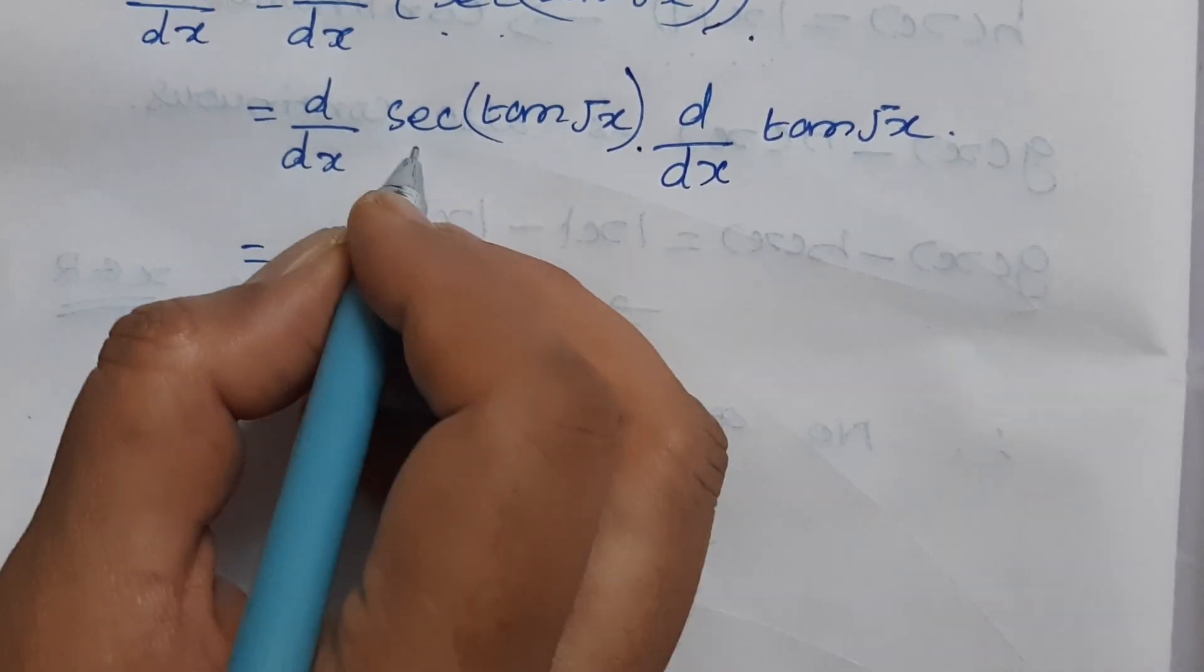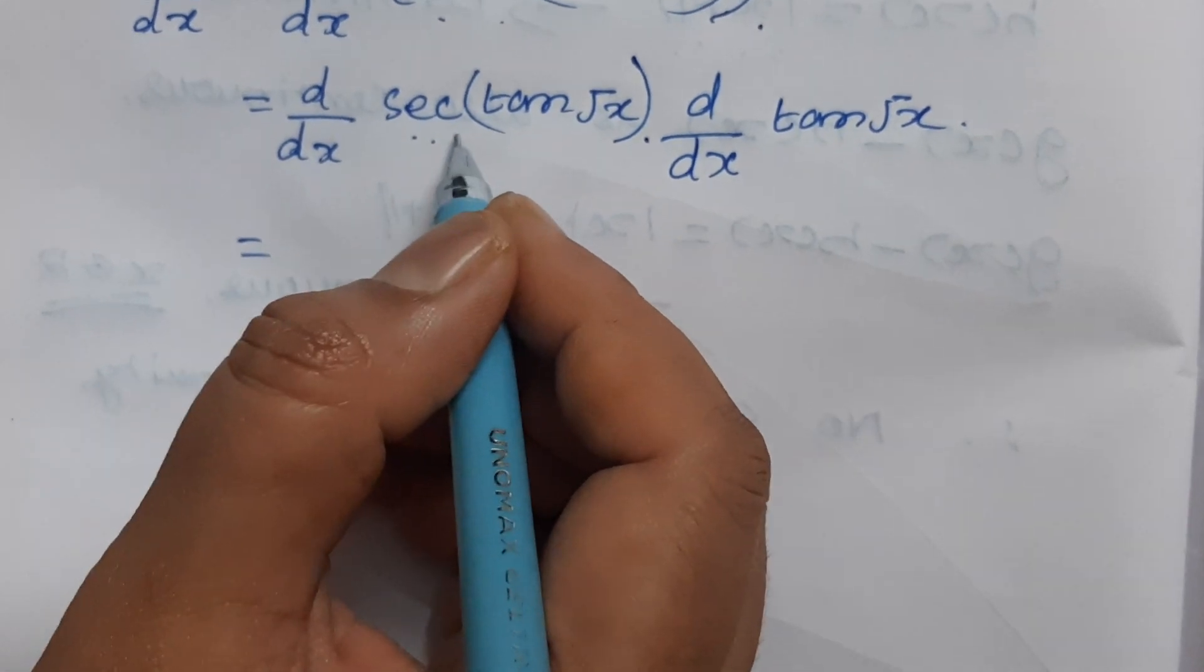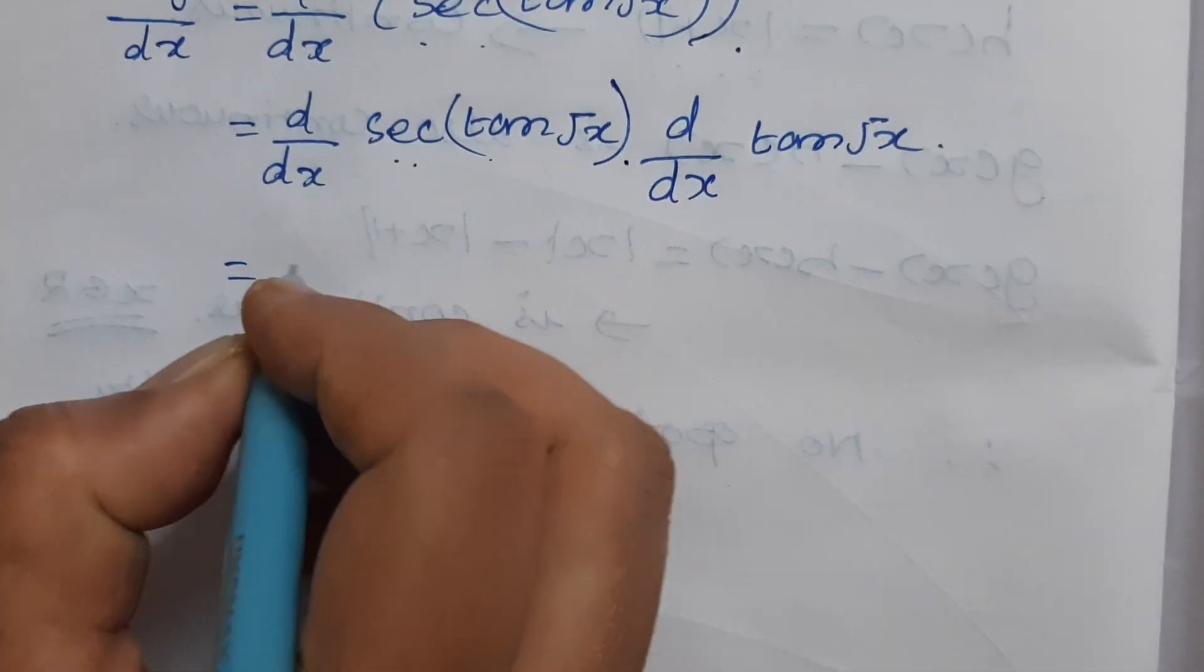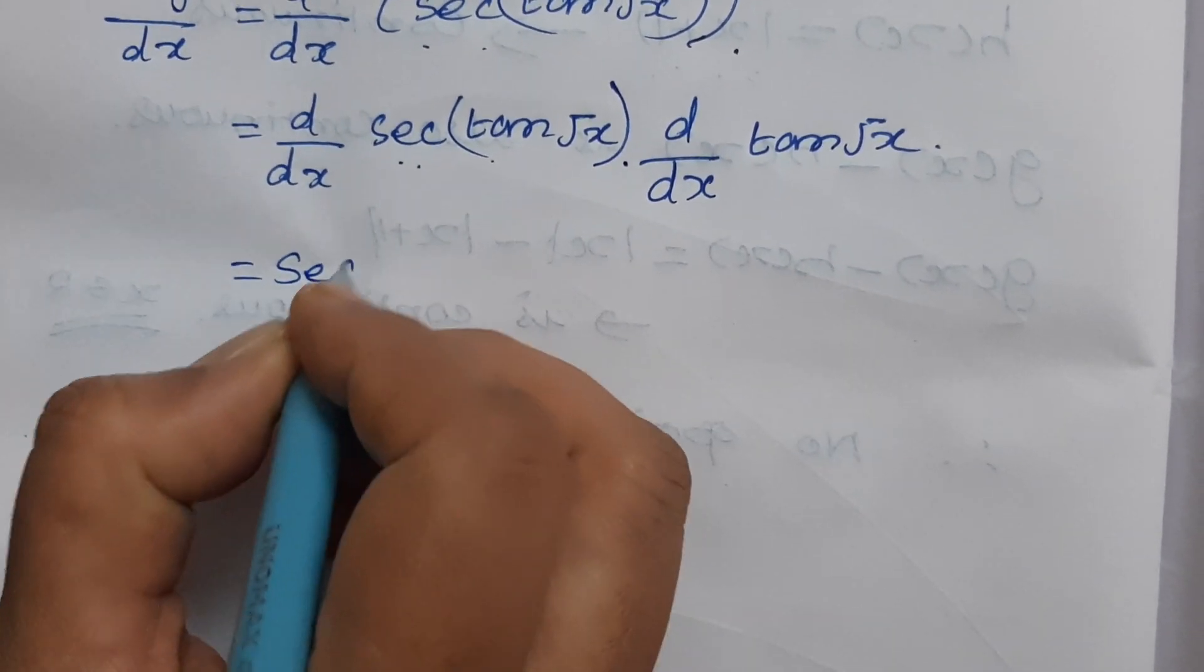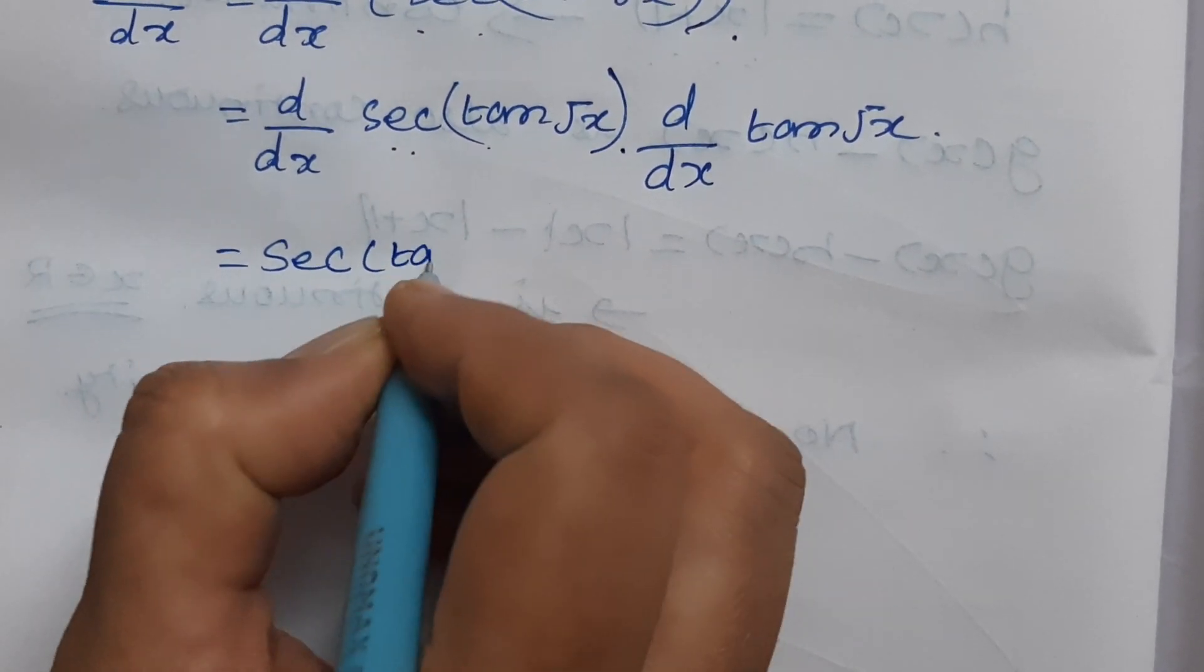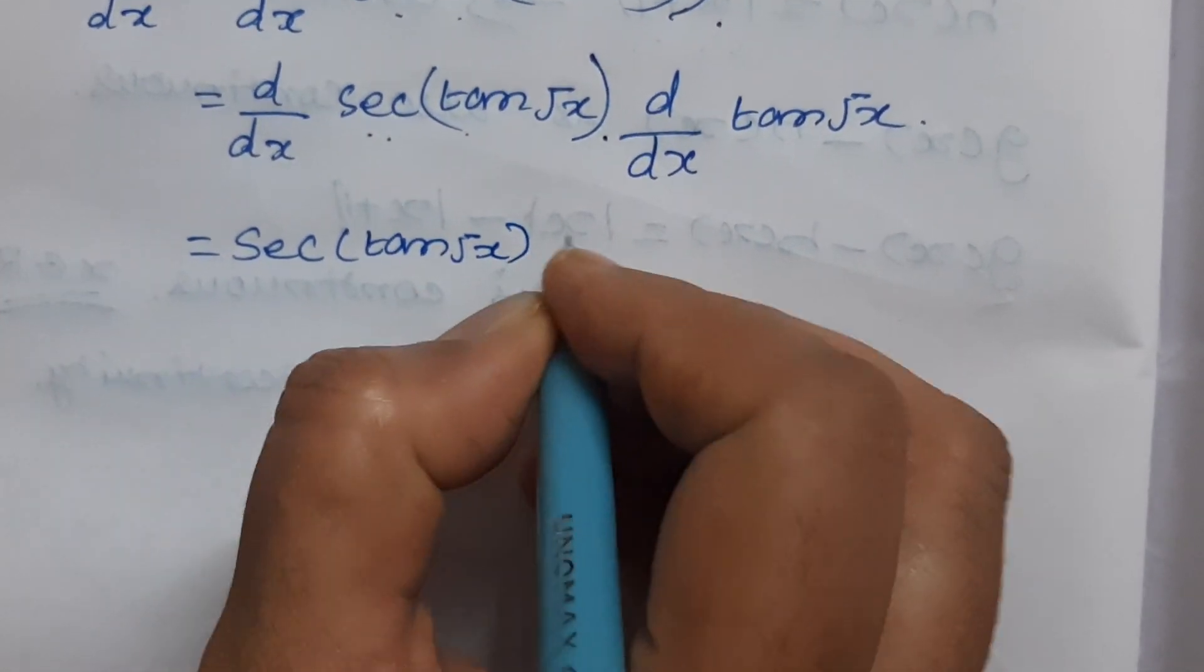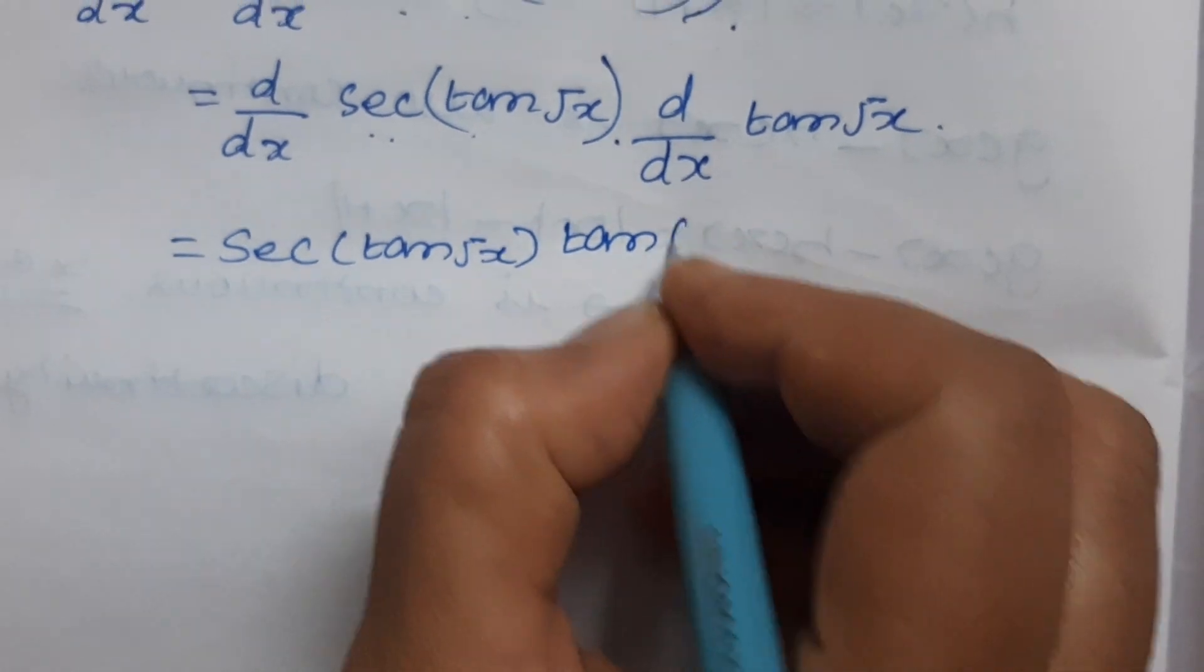Now, d/dx of sec(x). Differentiation of sec(x) is sec(x)tan(x). So, sec(tan√x) times tan(tan√x).